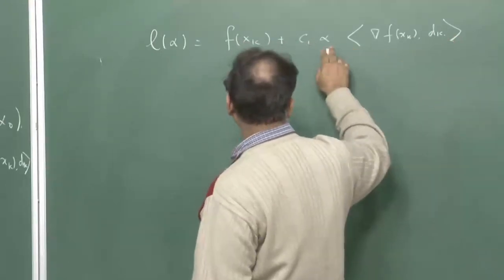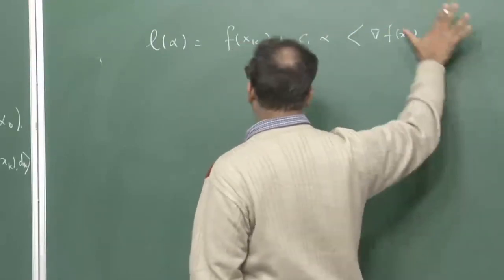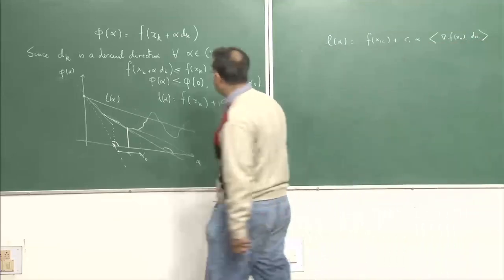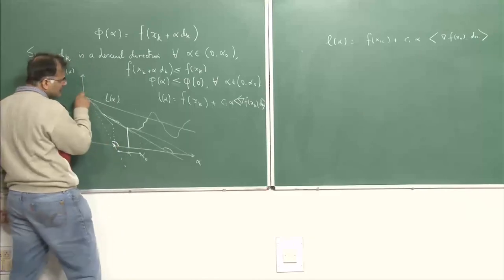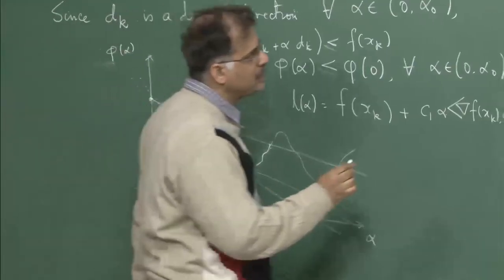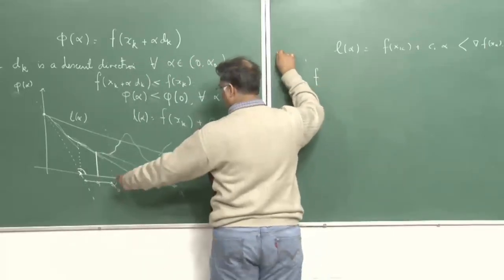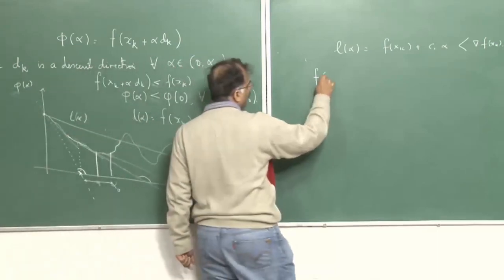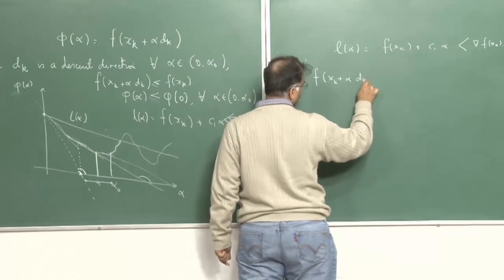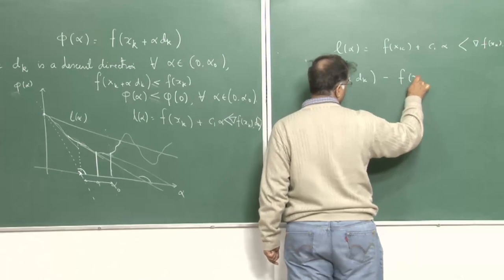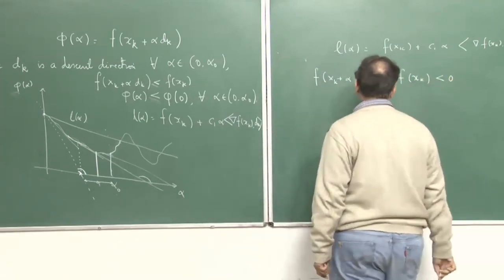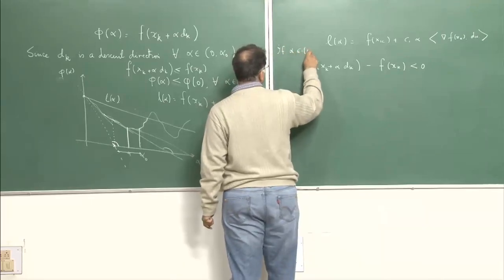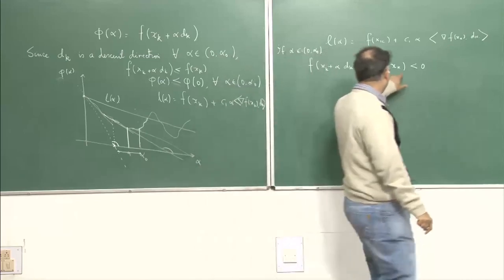Just after alpha = 0 (that is, at x = x_k), the function value decreases quite sharply until some interval alpha_0, and then it starts increasing. The line L(alpha) = f(x_k) + c_1 * alpha * grad f(x_k)^T * d_k is unbounded below, because grad f(x_k)^T * d_k is negative, c_1 is positive, and alpha is positive, so as alpha goes to infinity this becomes arbitrarily large and negative. Since f is assumed to be bounded below, the line must eventually cross the curve phi(alpha).